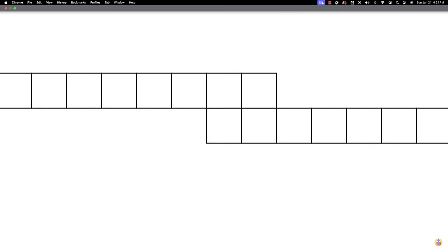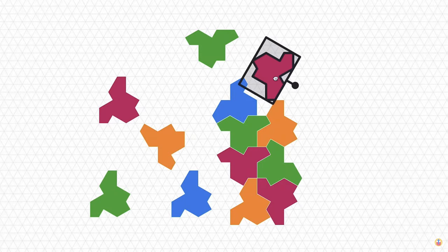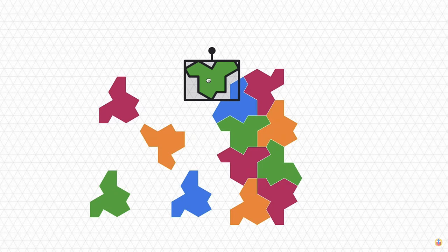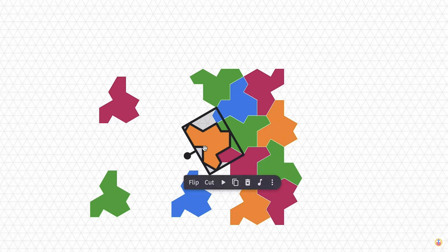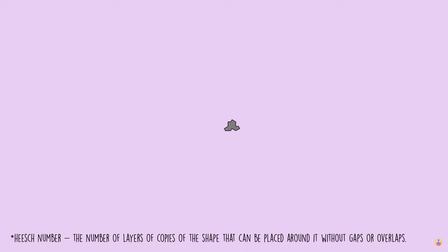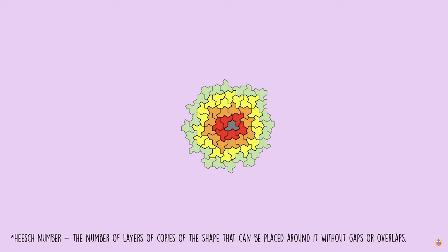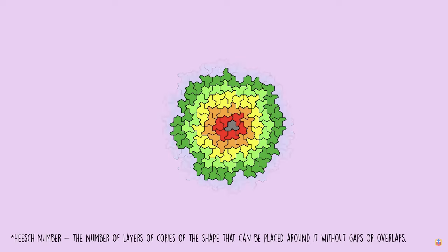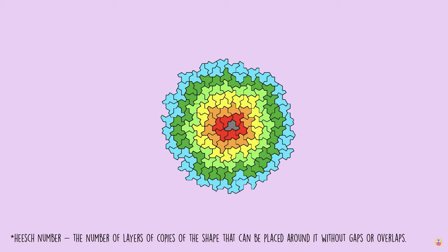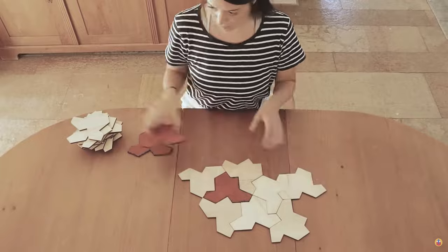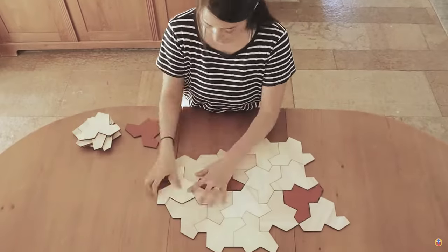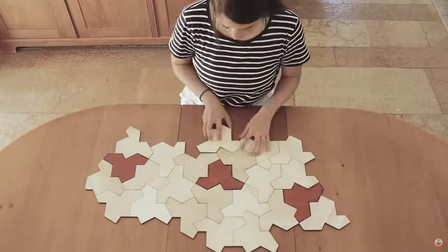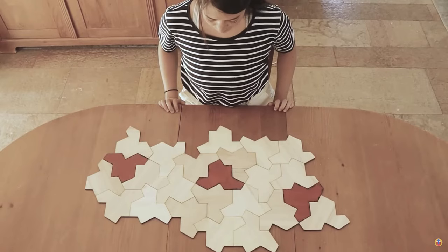I won't go deep into the geometry and how it works because Jade does an excellent job explaining it in her video — I'll link her video below. But from what I understand, there was a 50-year search for a single tile that can tile a plane in a non-periodic fashion, meaning the patterns created by the tiling don't repeat. In this video I want to look at how we can design this tile in Fusion 360, and I'll show you some useful techniques with the move tool.